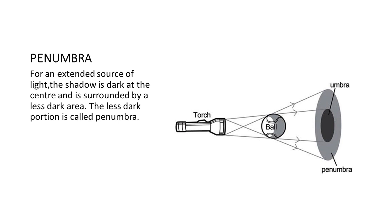But, on the other hand, if an extended source of light is taken, the shadow becomes dark at the center and it is surrounded by a less dark area. The darker part is umbra as it has been discussed earlier. But, the outer part is less dark and it is called penumbra. It is less dark because it receives some light, whereas umbra doesn't receive any light.